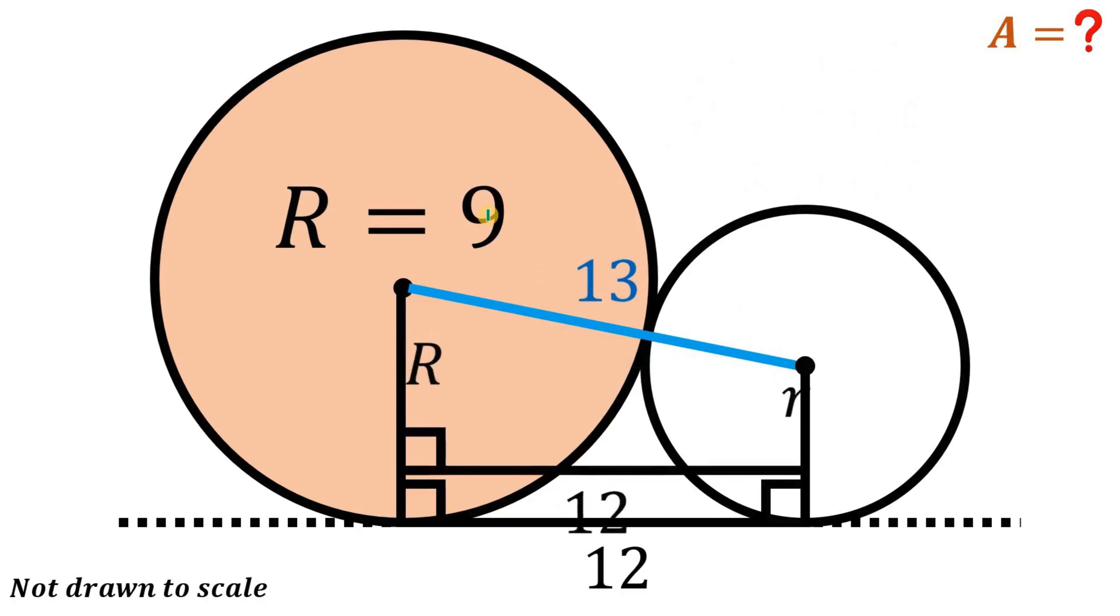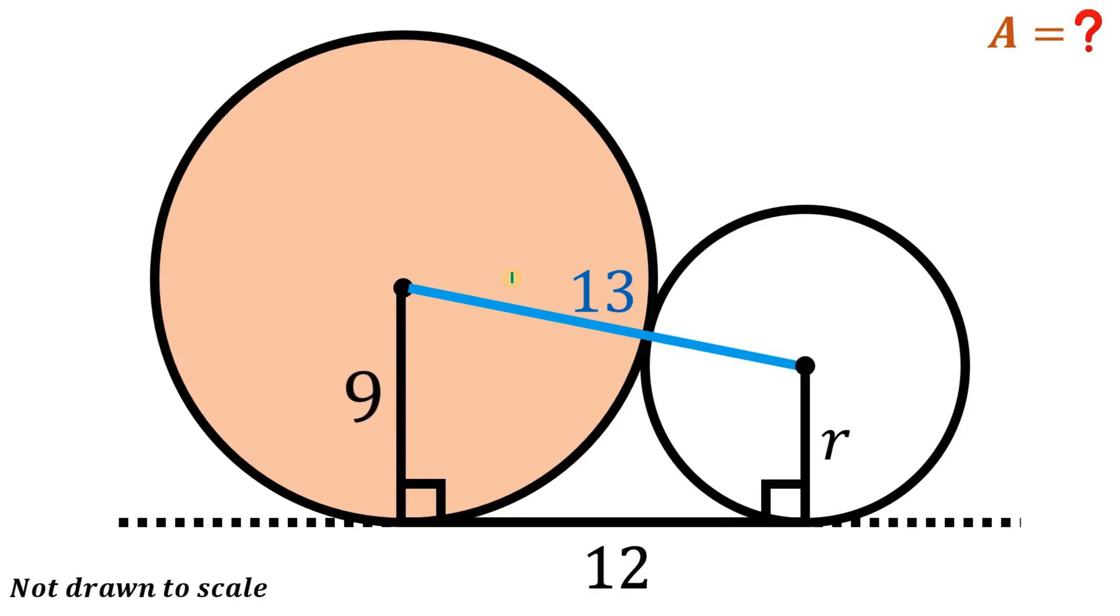So going back to our figure, we now know that the measure of this capital R is 9 units. And we can now calculate its area.